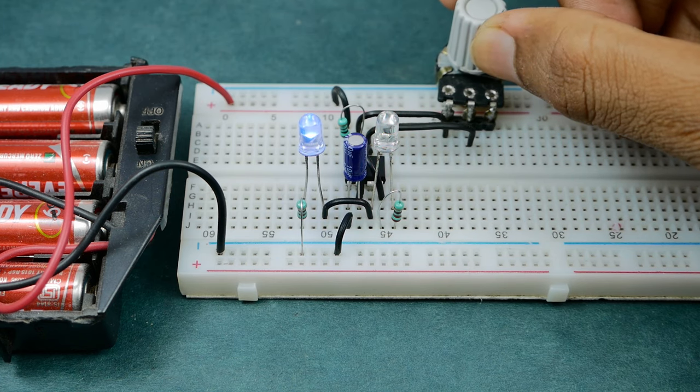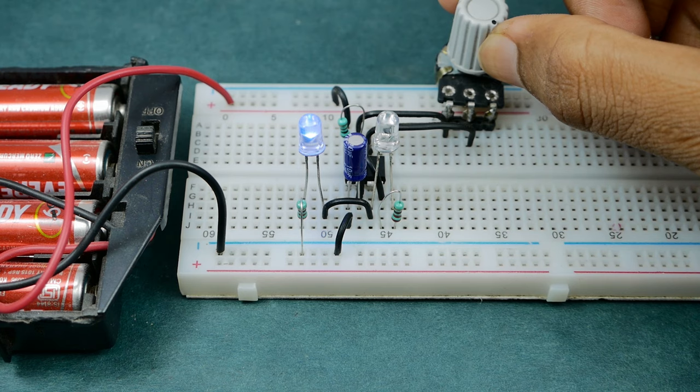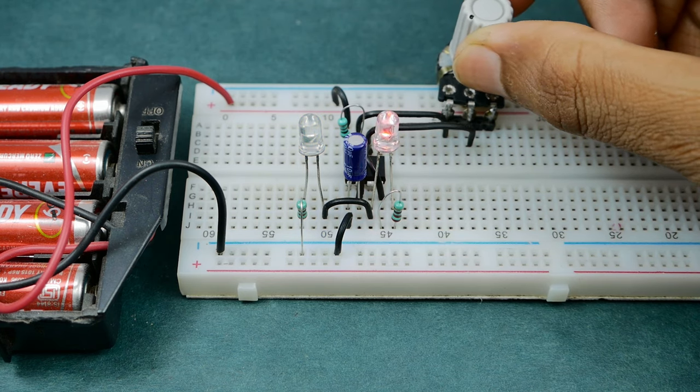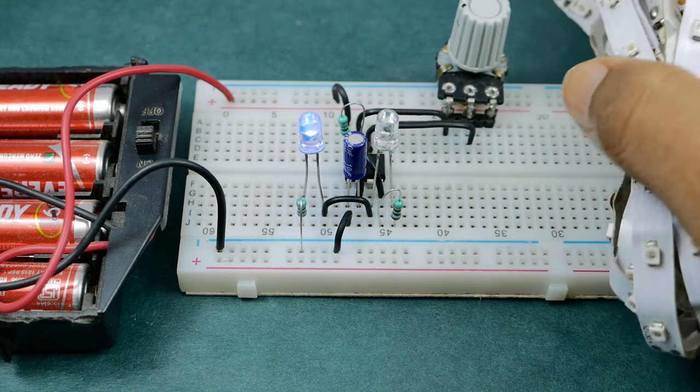Additionally, you might need to add a relay module at the output of 555 timer IC if you intend to use this circuit with heavy loads, for example lights that operate on AC power or LED strips.